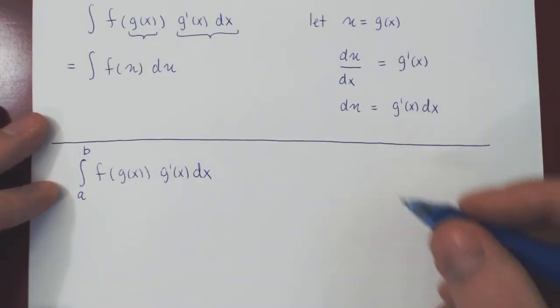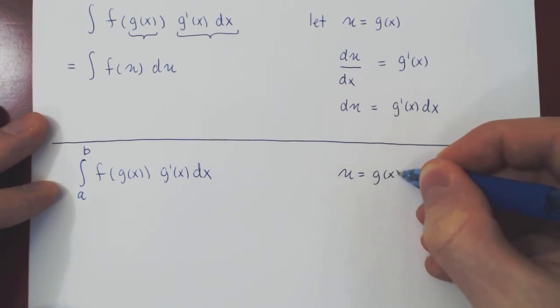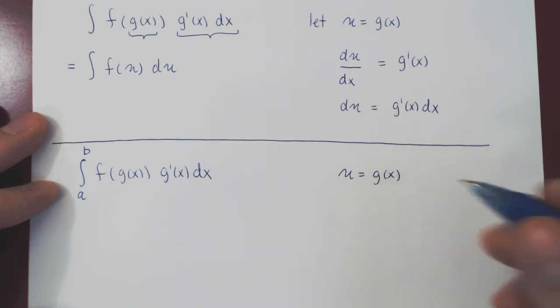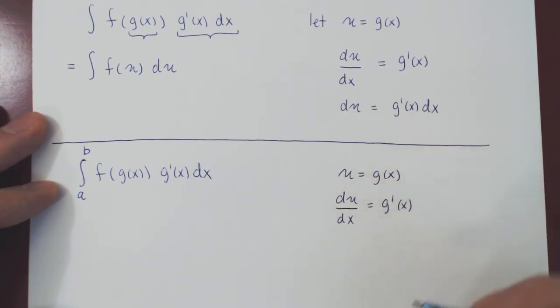right? We're going to make the exact same substitution. So we let u be g of x. We differentiate u with respect to x because it is a function of x, so du over dx is the derivative of g with respect to x. And once again, multiplying across by dx, we get that du is g prime of x dx as before.